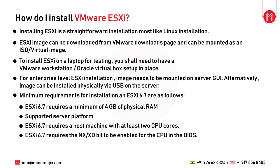Installing ESXi is straightforward, similar to a Linux installation. The image needs to be downloaded from the VMware downloads page and mounted as a virtual image on the server hardware. For a laptop study setup, download the image and mount it on a virtual machine in your workstation. For enterprise level, the server hardware needs to be booted manually or via ILO interface. ESXi 6.7 requires at least 4 GB RAM, at least two CPU cores, hardware on VMware's supported list, and virtualization technology enabled in BIOS.